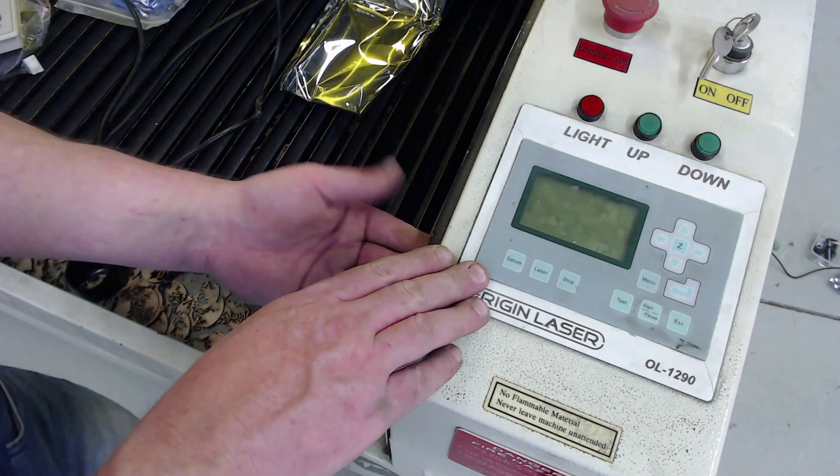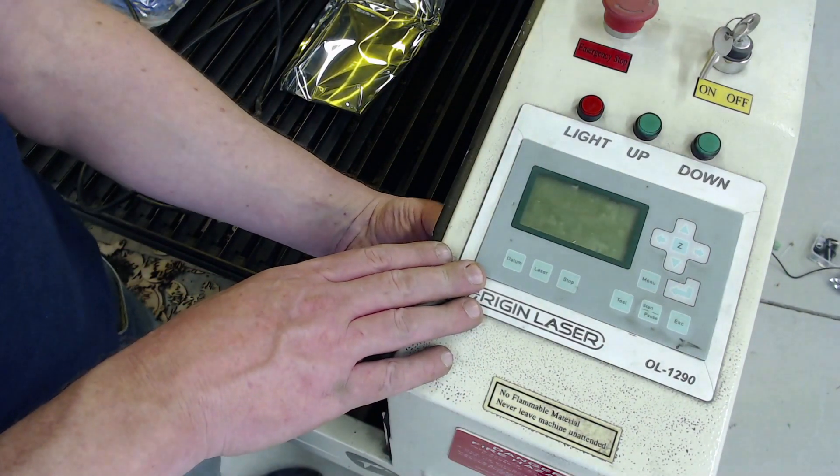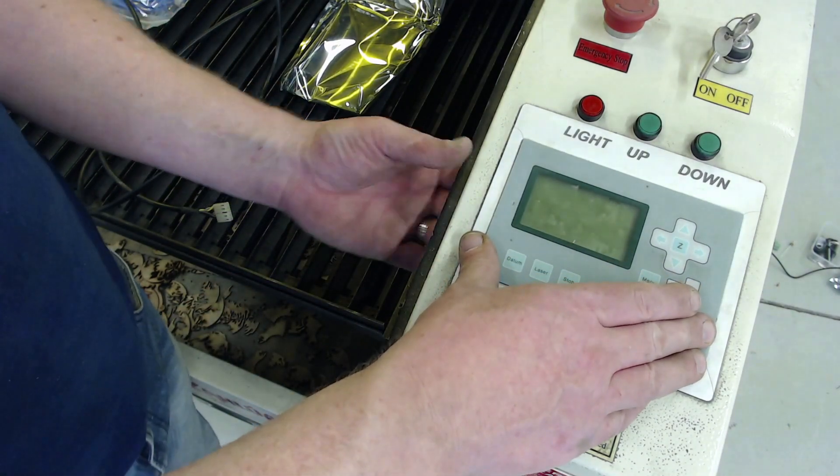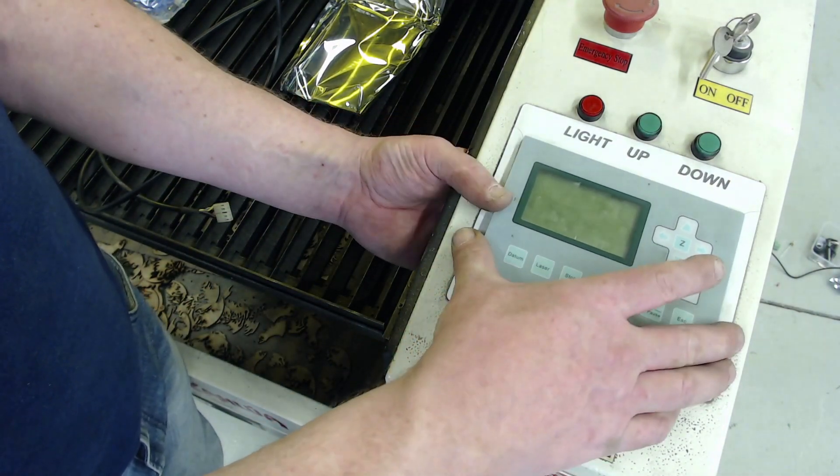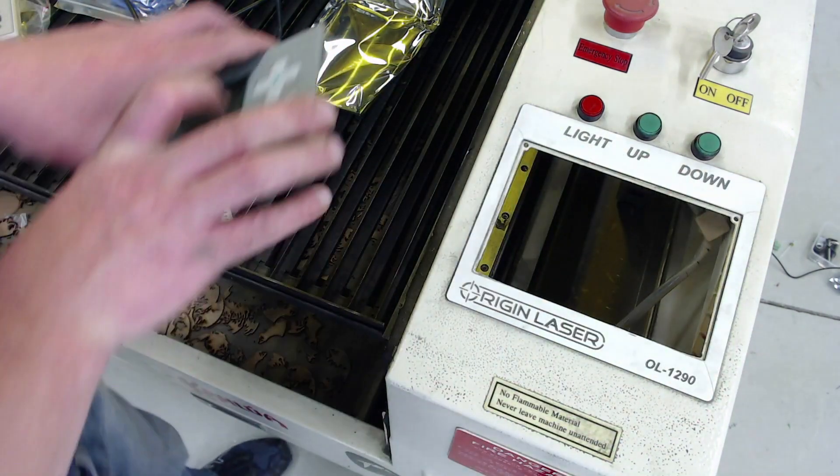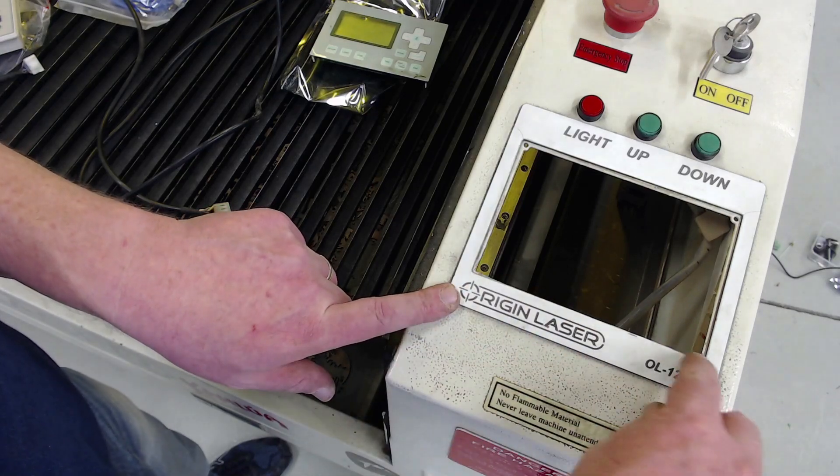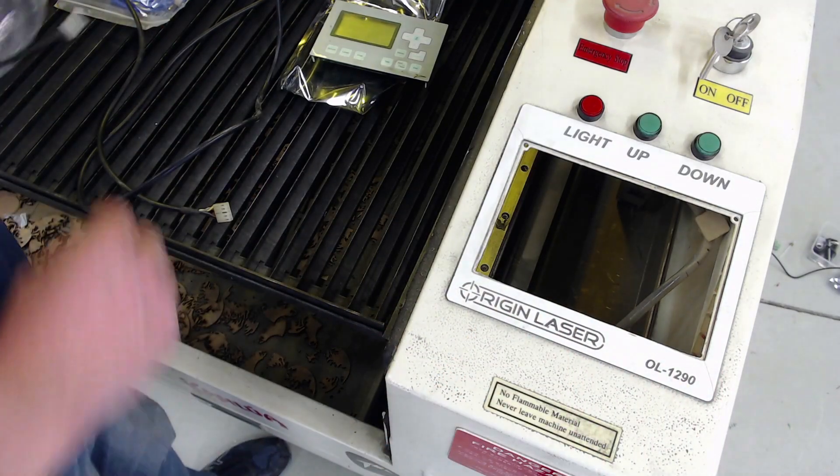To remove the old control panel just undo the screws underneath or the nuts underneath and the panel should lift up. Disconnect the HMI cable that goes down to the main controller board and this slides out. This is slightly smaller than the new controller so you may need to just shave a little bit off the bottom edge in order to fit the new controller in.